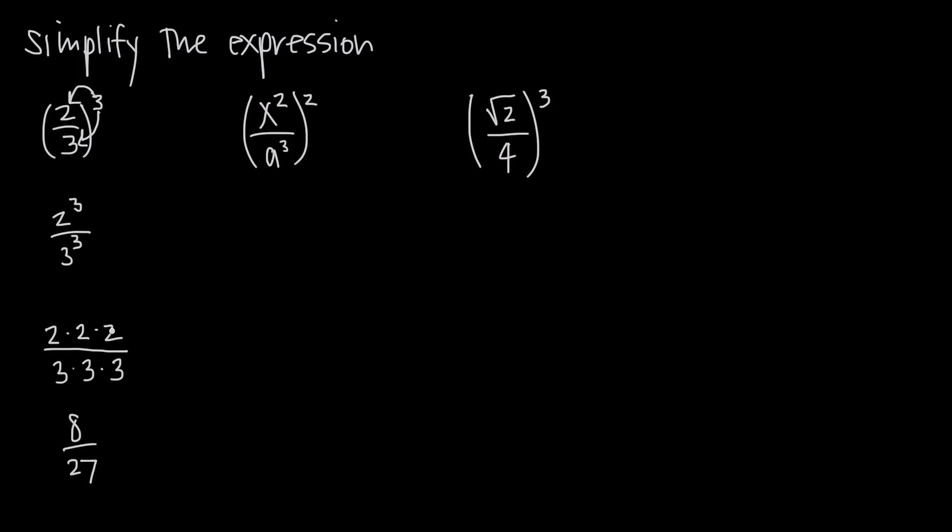And when we simplify that we get 8 over 27, because 2 times 2 is 4, 4 times 2 is 8, so we get 8 in the numerator, and 3 cubed gives us 3 times 3 is 9 and 9 times 3 is 27. So the final answer here is 8 over 27.